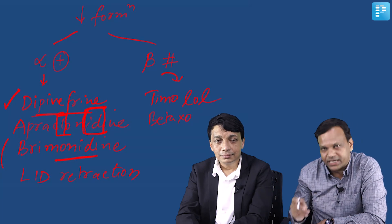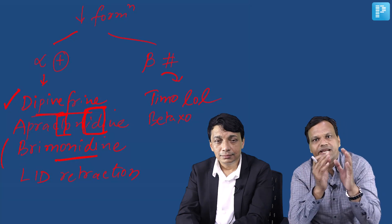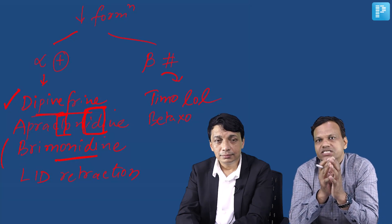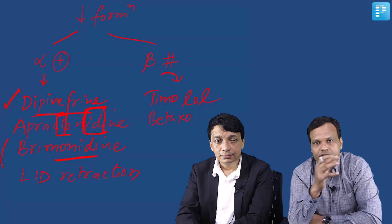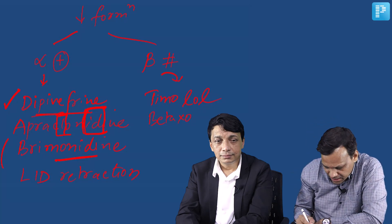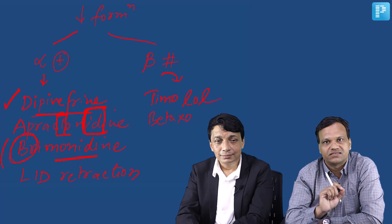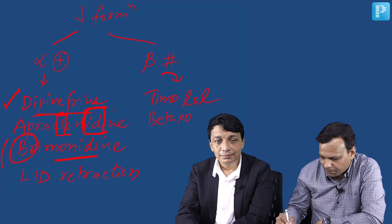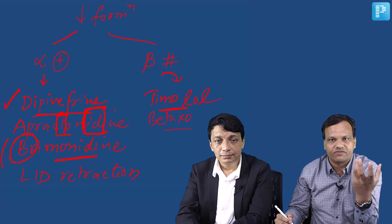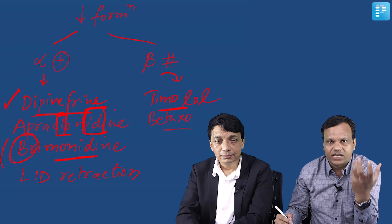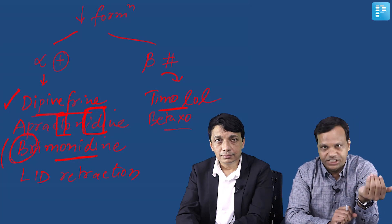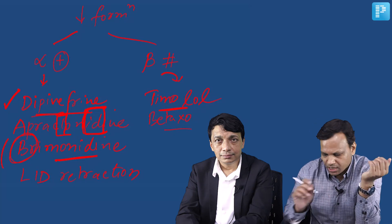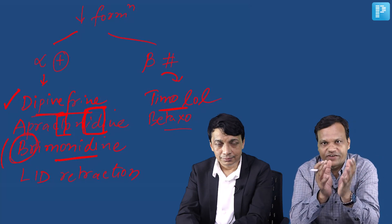Brimonidine is avoided in young patients — particularly those less than 2 years old — because it causes brain suppression and apnea in newborn babies. Beta blockers — any drug ending in '-olol,' like timolol or betaxolol — mainly have systemic adverse effects, particularly bronchoconstriction. So they are avoided in asthmatic patients. These are the drugs which decrease formation of aqueous humor.